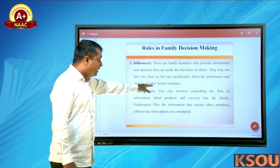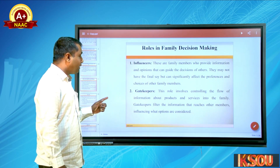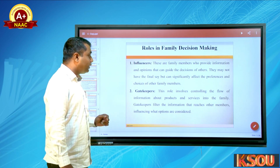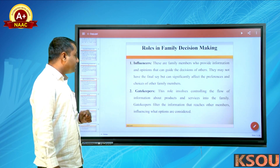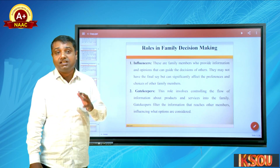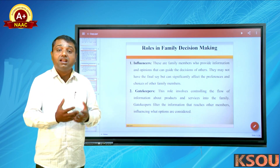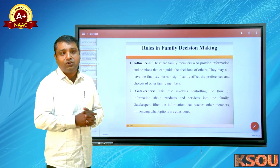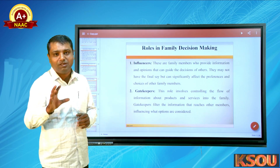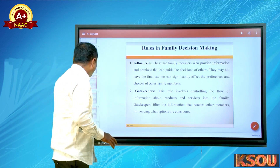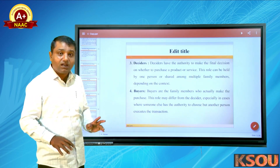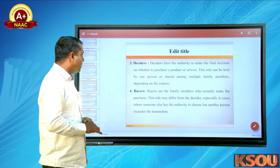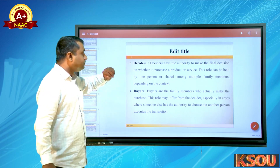The second role is gatekeepers. This role involves controlling the flow of information about products and services into the family. Gatekeepers filter the information that reaches other members, influencing what opinions are considered. From a large amount of information, they filter what is needed by the family — this influences whether a product is purchased or rejected.